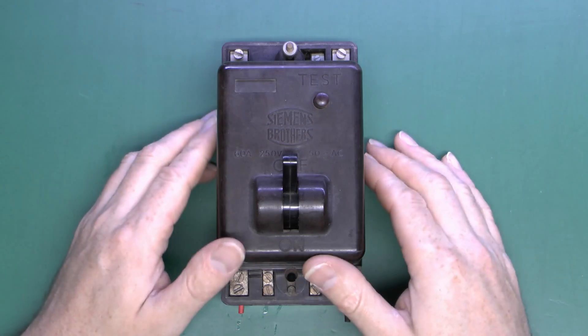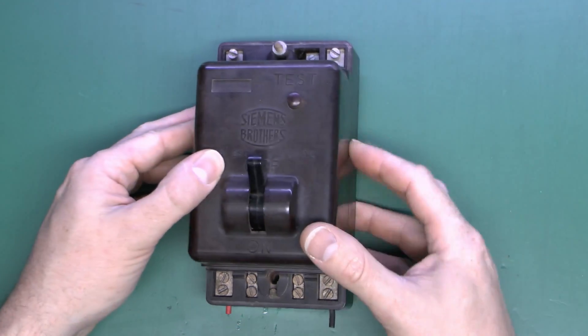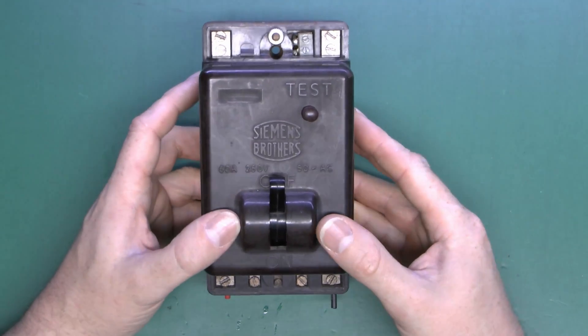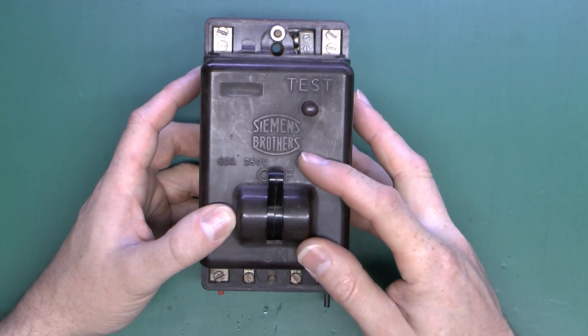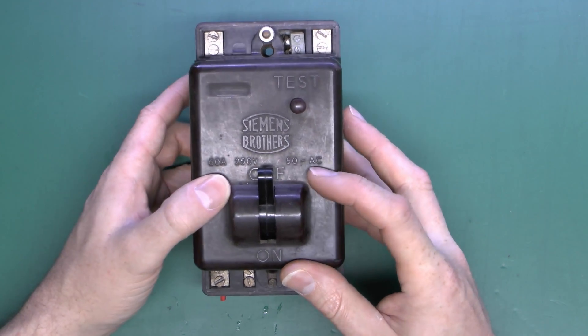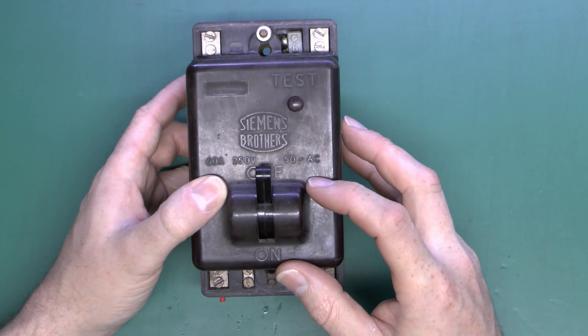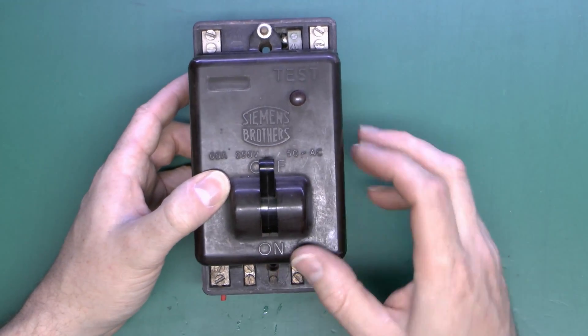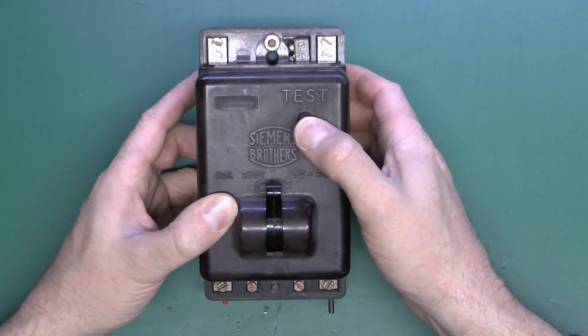This is one of these voltage-operated circuit breakers of the type you'd use to cover the whole installation. It's got the Siemens Brothers logo in the center, ratings are 60 amps, 250 volts, and 50 hertz AC. It's got the large on and off switch in the middle and then the test button at the top.